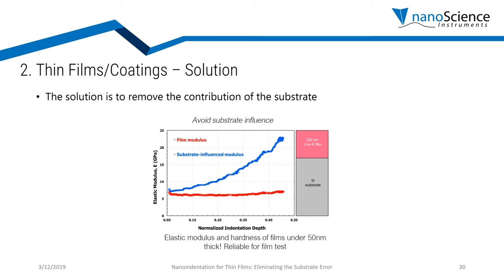Once you apply the substrate correction, you get data that is actually correct. Without correction, the blue curve shows substrate-influenced modulus increasing with depth, which makes no sense since the material is the same. Other commercial nano indenters without CSM can only measure one point on this blue curve, giving a wrong and inconsistent property value depending on depth. Measuring at different depths gives different numbers, making you think you have a different product when you do not. With the KLA thin film solution applying the correction, you get the red curve — the true properties of the thin film.